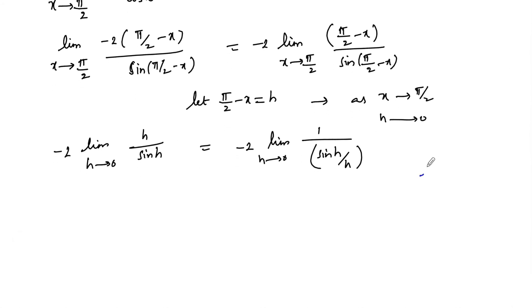And since we know that limit theta tends to 0, sin theta upon theta is equal to 1, so we can give the answer here: minus 2 into 1 upon limit h tends to 0 sin h upon h, which gives 1. So 1 upon 1. Therefore, the answer is minus 2 for the limit.